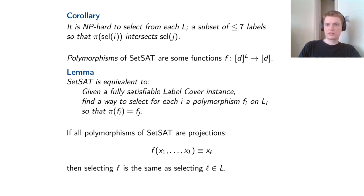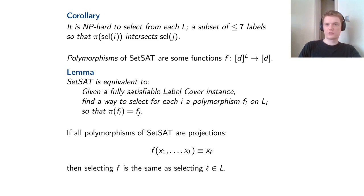π(f_i) means the function obtained from f_i by rewiring inputs according to π, and this must exactly equal f_j. For example, consider the case when all polymorphisms are projections — functions of the form f(x_1, …, x_l) = x_m for some fixed m, simply outputting one input. In that case, selecting such a polymorphism is the same as selecting label l from the label set, which is exactly solving the standard label cover instance — NP-hard even without the PCP theorem.